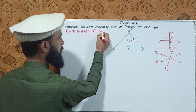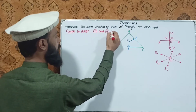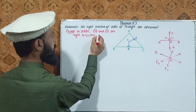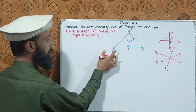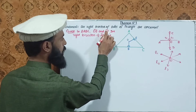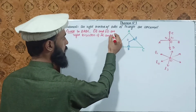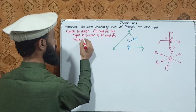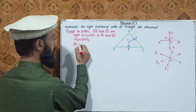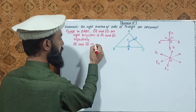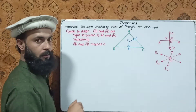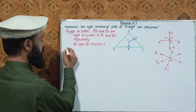OE and OD are right bisectors. OE is the right bisector of AC, and OD is the right bisector of BC respectively. OE and OD meet at point O. To prove: the right bisectors of sides AB, BC, and AC are concurrent at O.